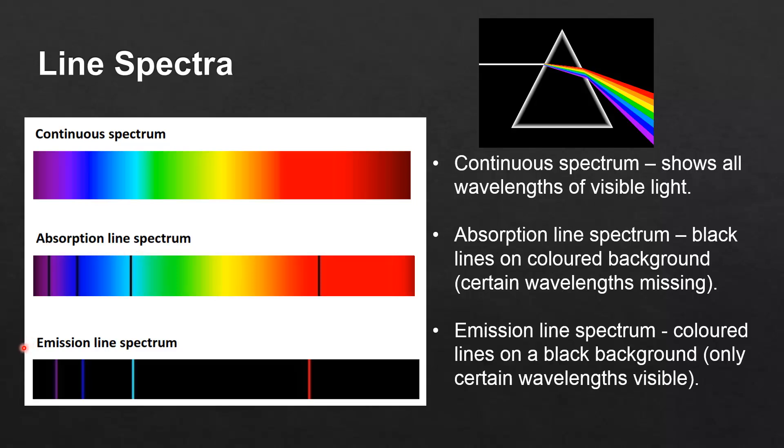And at the bottom here we have the emission line spectrum which consists of colored lines on a black background. So only certain wavelengths of visible light can be seen. So just to recap, a continuous spectrum shows all the wavelengths of visible light.